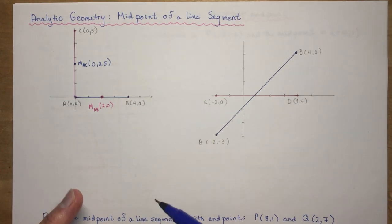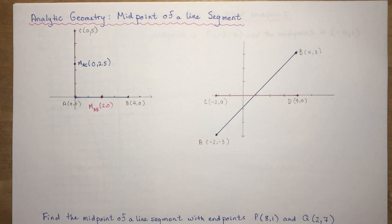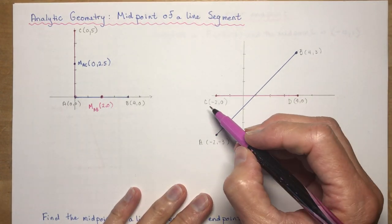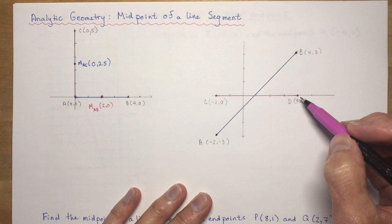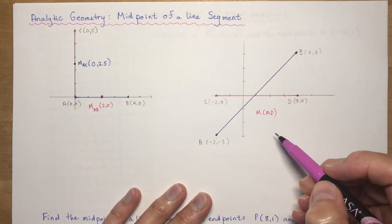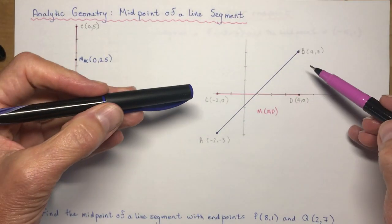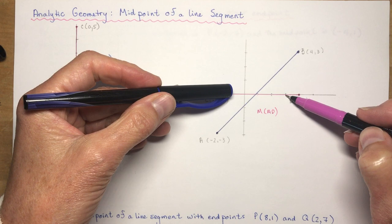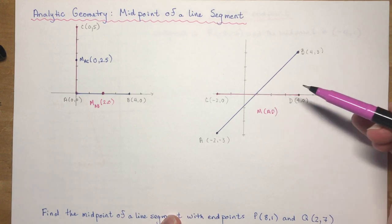Now let's think about how we get these midpoint numbers by looking at an example not centered at the origin. Line segment CD goes from (−2, 0) to (4, 0). To find the midpoint of CD, you could count inward from each end — going in one, one more, one more — and you land right at 1 and 0.